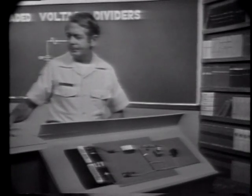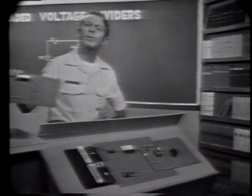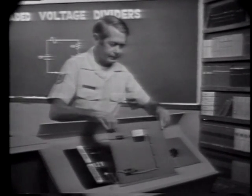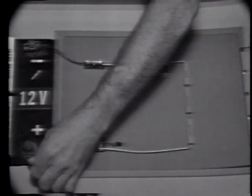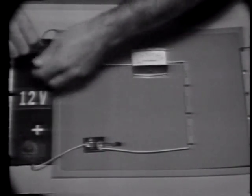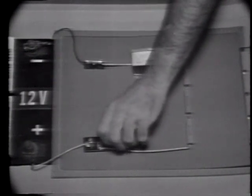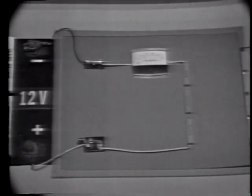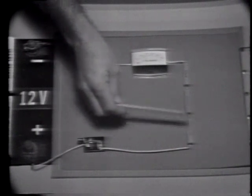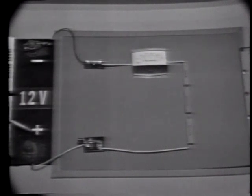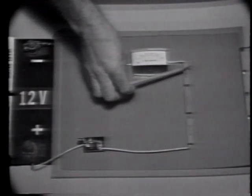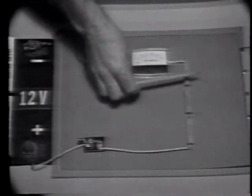Let's use a different circuit and start by reviewing what we already know about voltage dividers. I'll remove the first trainer and put this one in its place, making the connections to the power source and applying power. Now we know that when components are connected in series like this, current will flow from the battery through each component and back to the battery. This develops a voltage across each component, and the sum of the voltage drops equals the applied voltage.